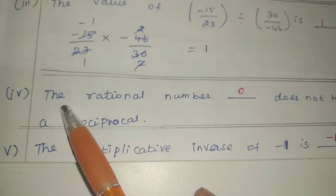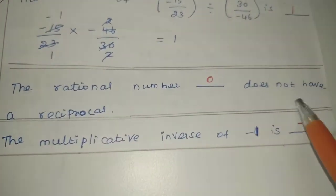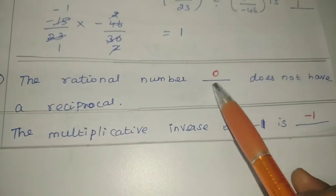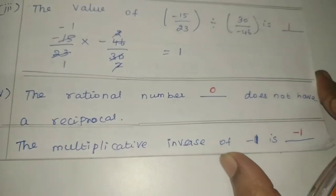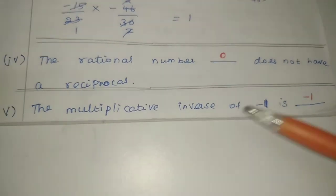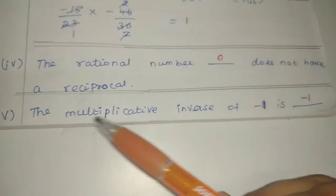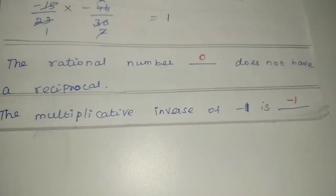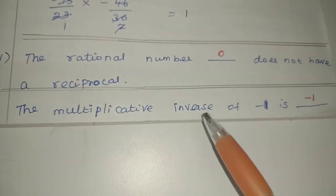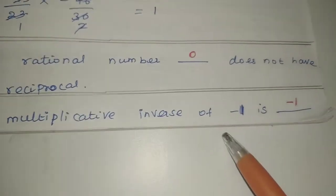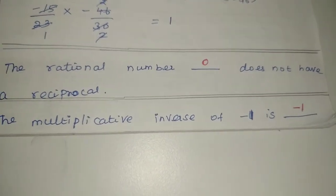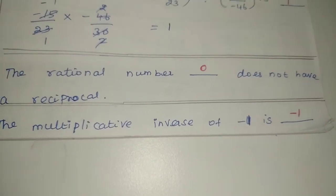The rational number 0 does not have a reciprocal; 0 has no reciprocal. The multiplicative inverse of minus 1 is dash. Multiplicative inverse means reciprocal. So minus 1 is its own reciprocal. The answer is minus 1.